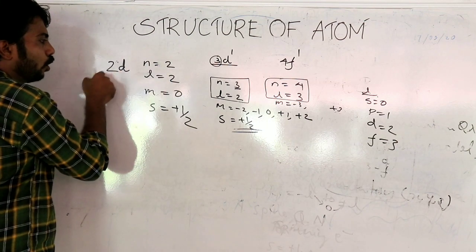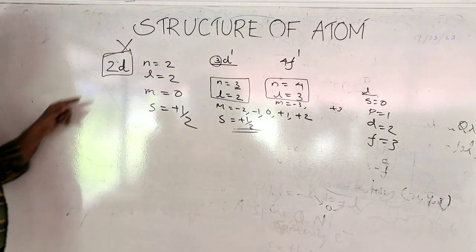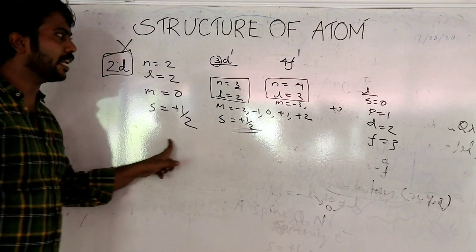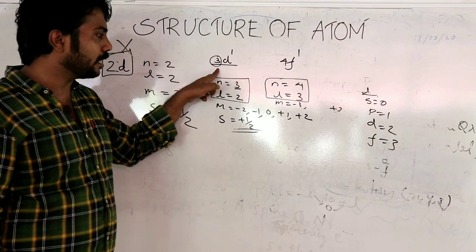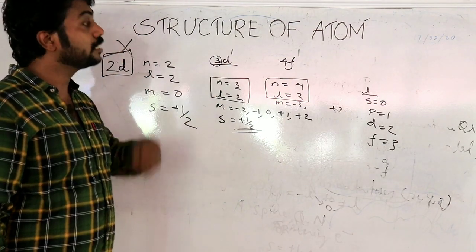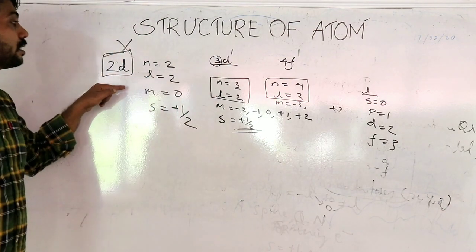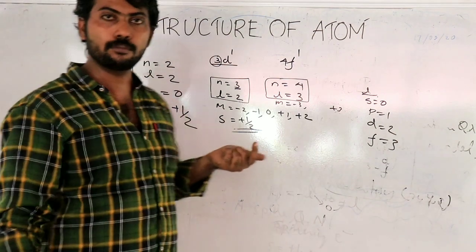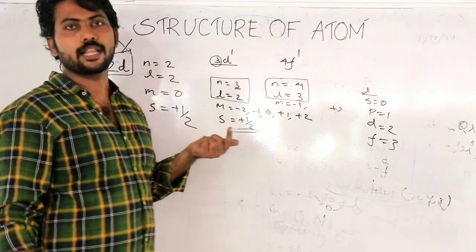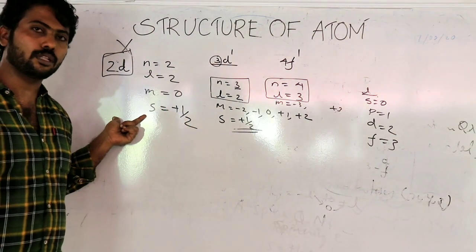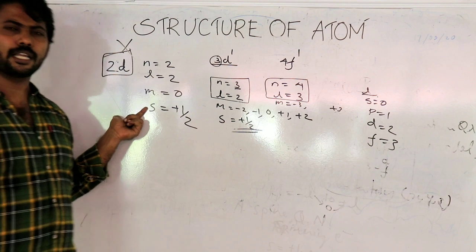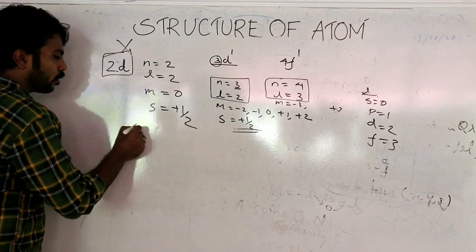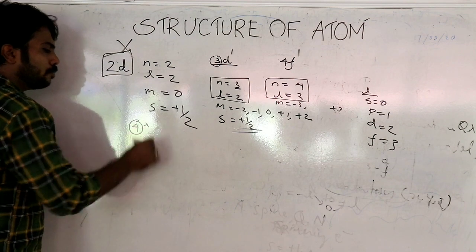This notation becomes 2d, which is not possible. If you are asked an application question about whether a given set of quantum numbers is possible or not, you need to verify. This type of question carries 4 marks.